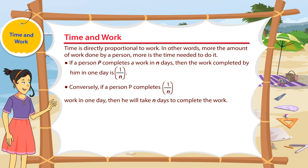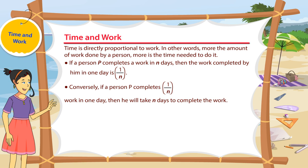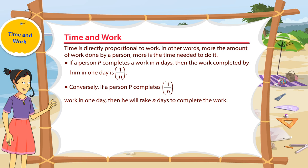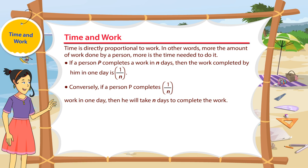Conversely, if a person P completes 1 by N work in a day, then he will take N days to complete the work.